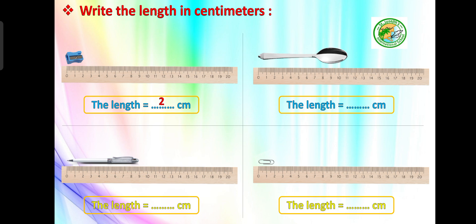Another example: draw your answer without my help. The length of a spoon — we want to measure the length of a spoon. From zero to eleven equals eleven centimeters. Can you try to measure the length of your spoon at home using your ruler?